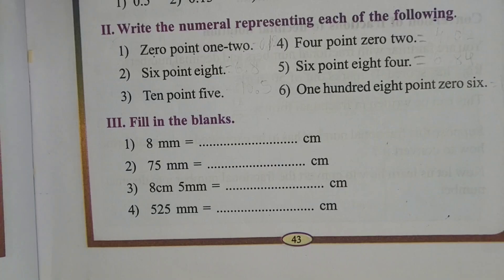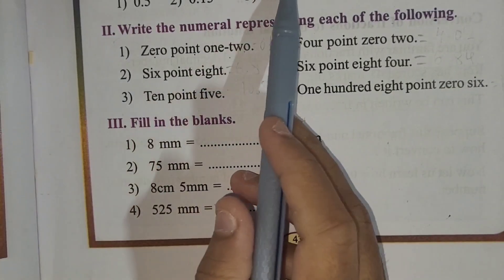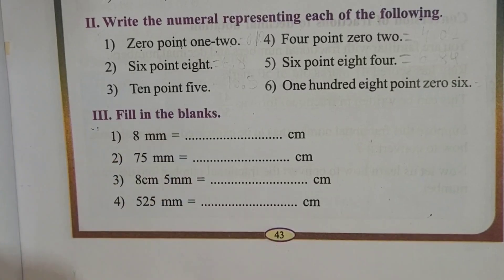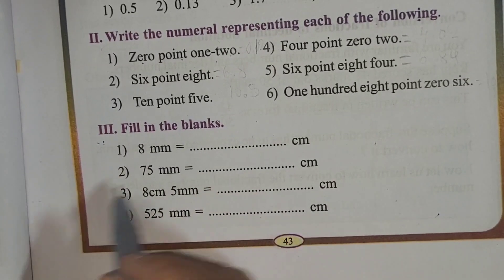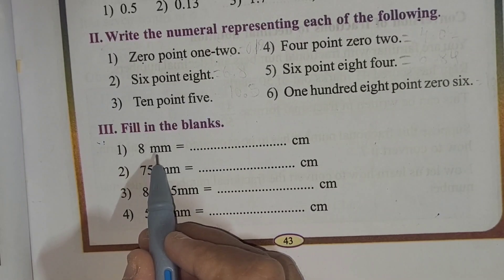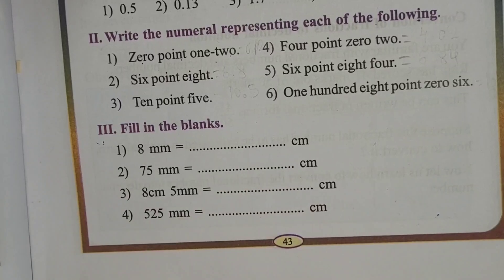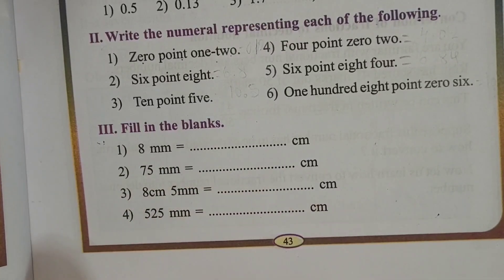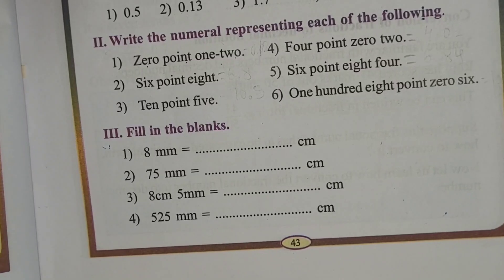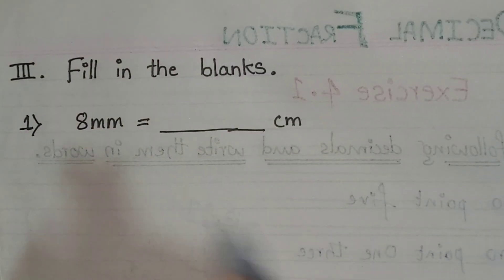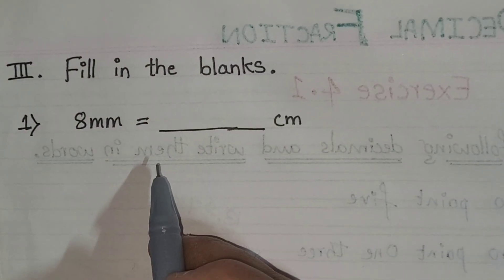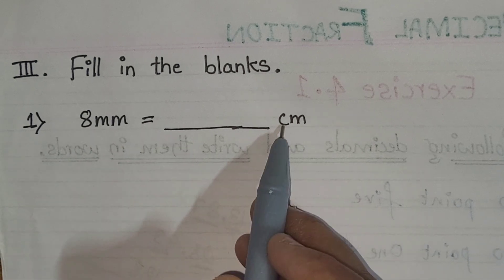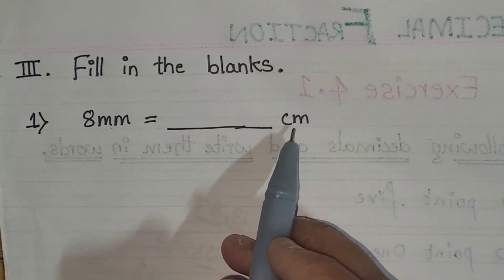Now come to exercise 4.1, third section — fill in the blanks. First one: 8 millimeters equals dash centimeters. You can see I have written it here. So, 8 millimeters equals dash centimeters.